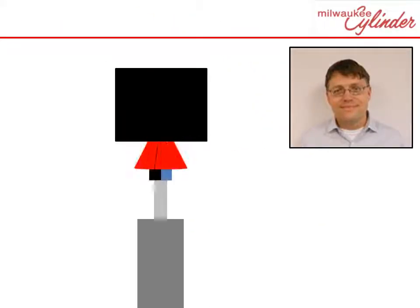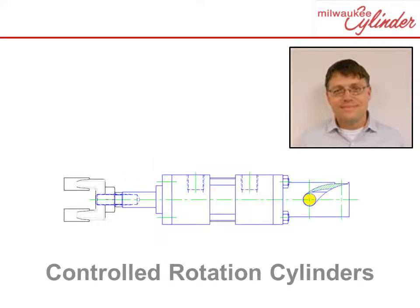In a different application, you might want to pull an angled part out of a mold. A controlled rotation cylinder can be used in either of these applications.